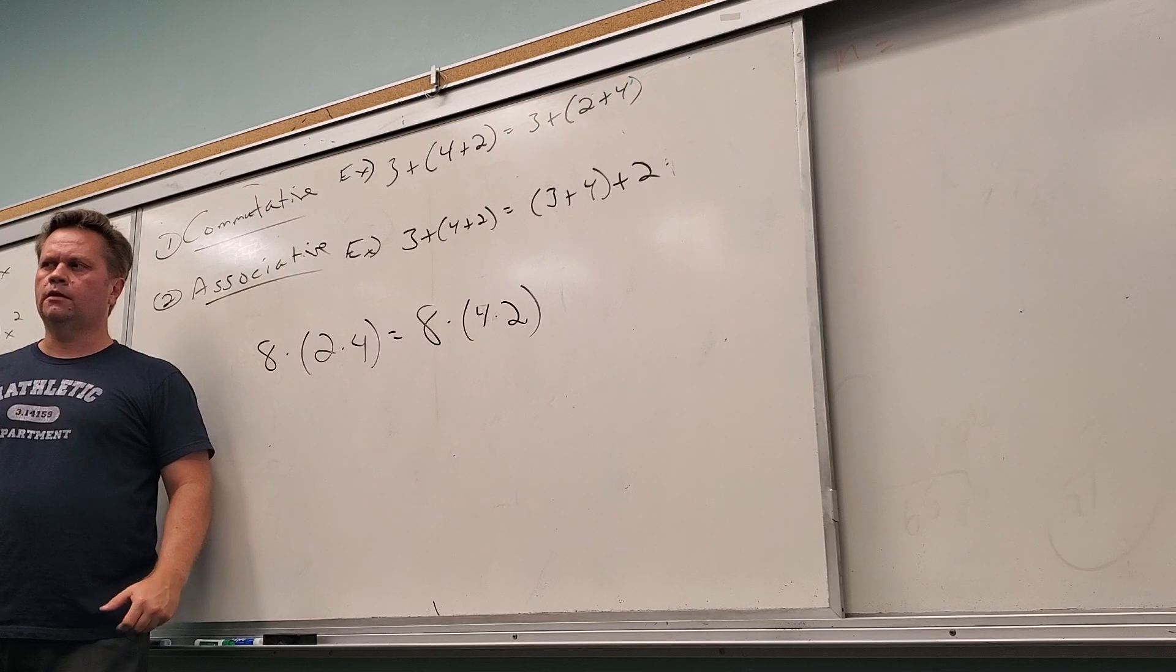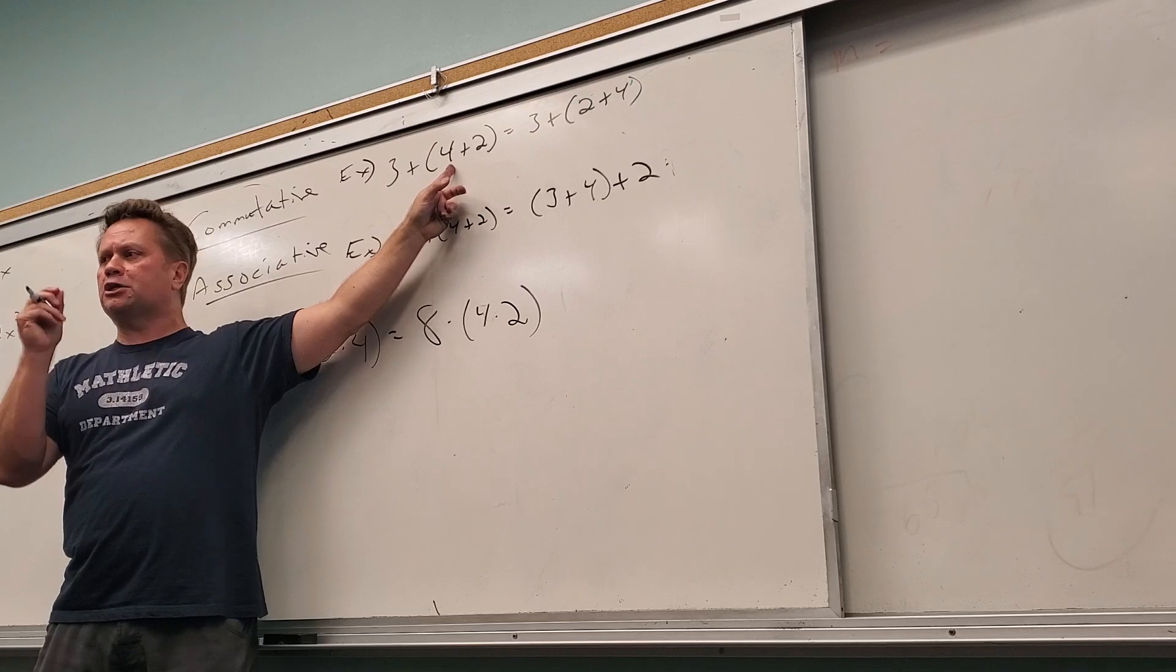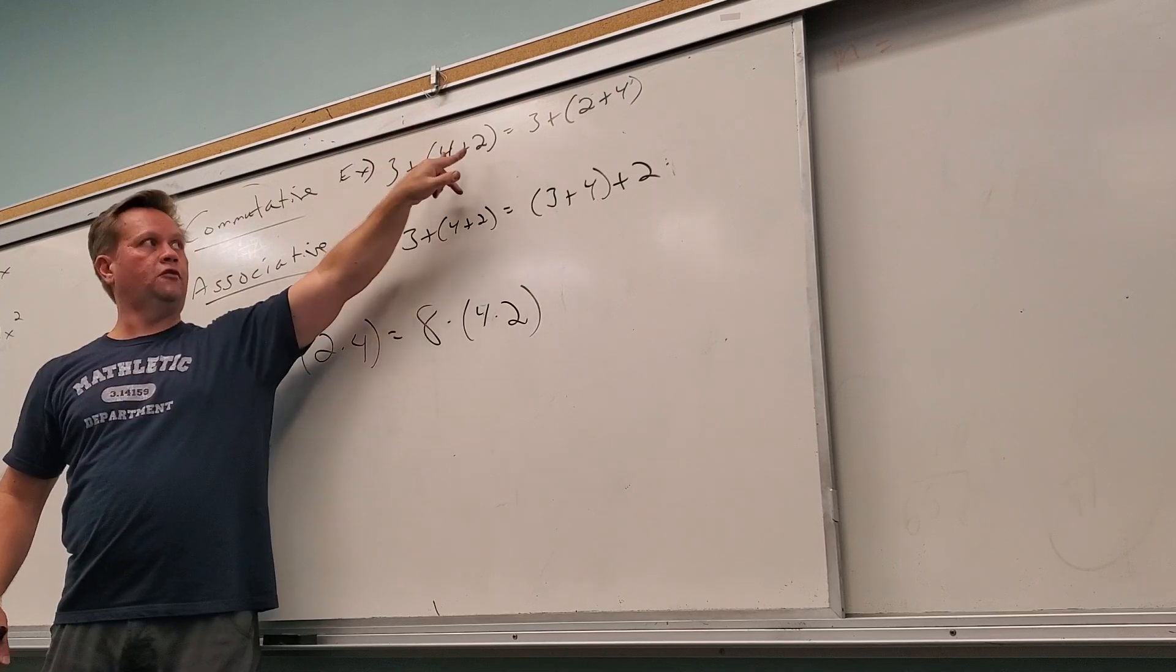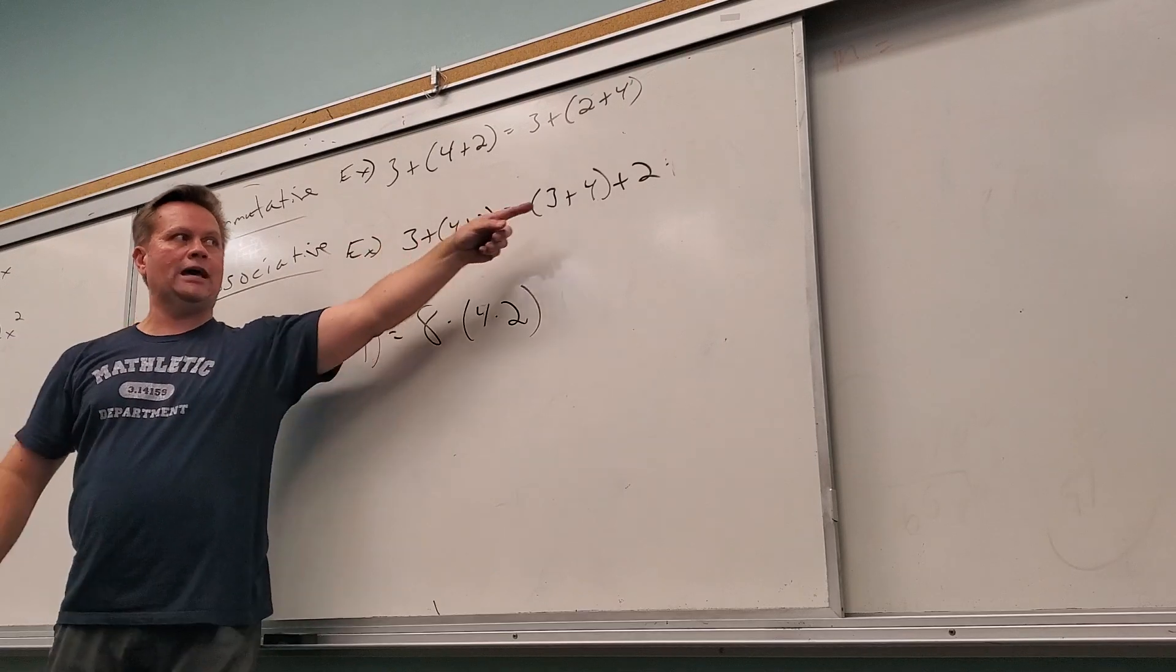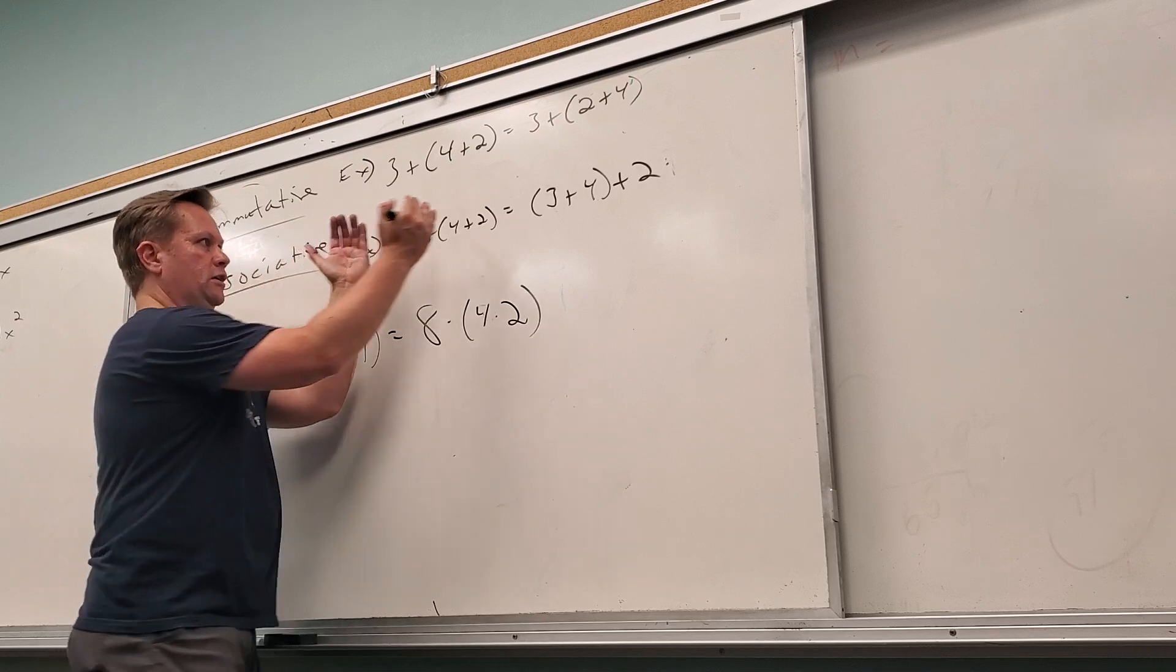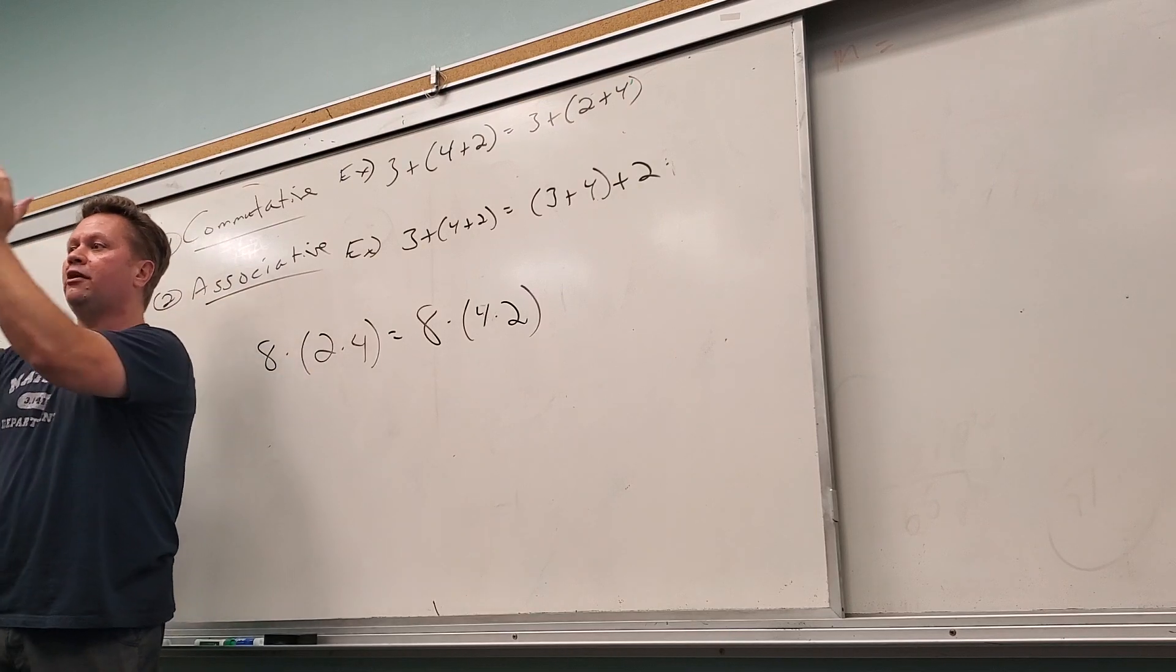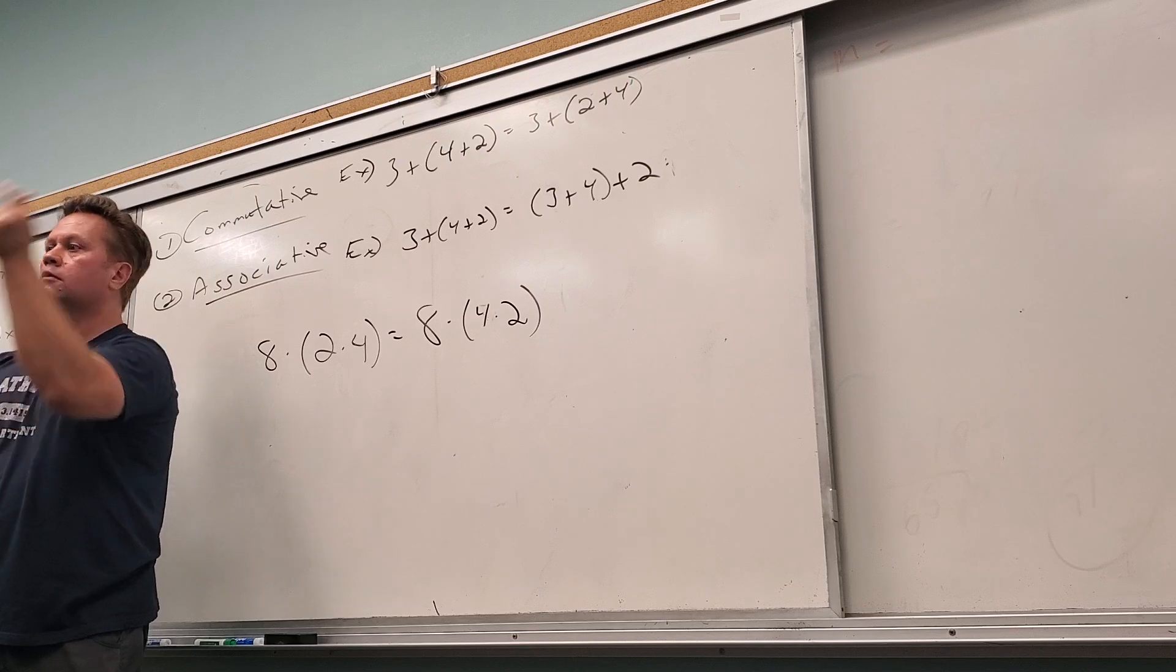So subtraction and division are not commutative or associative. But addition, multiplication, hold it. You guys all right? Does that sound close to each other? Now watch - on the first one, did the parentheses themselves actually move? No. Just the stuff inside moved. The two and the four switched places. So individuals commute. What happened on this line? The three, the four, and the two are all in the same relative place. What actually happened? Parentheses moved. When parentheses move, associative. When individual things move, commutative.